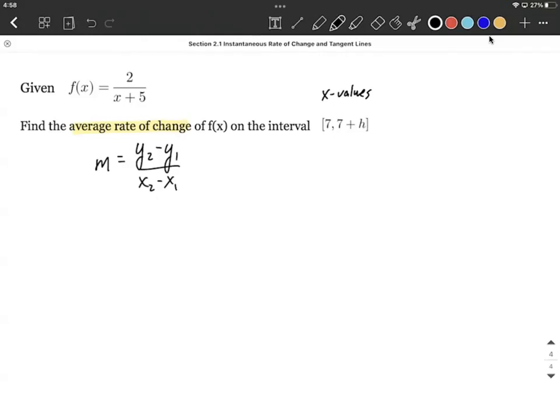Alright, so we have some x values from our interval, we have a function. Let's put these together and get y values that go with them. So first, I'm going to plug in, evaluate our function at 7. So that's going to be 2 over 7 plus 5, or 2 over 12. That corresponds with the ordered pair 7 comma 2 twelfths. We could make that 1 sixth if we would like to.